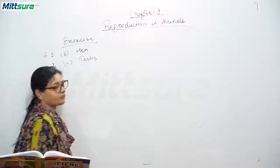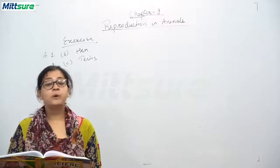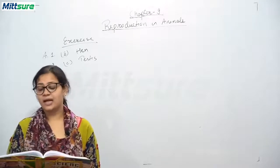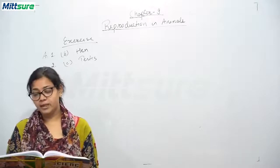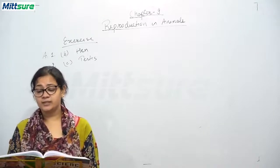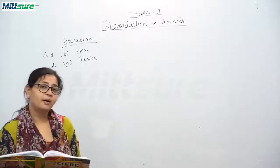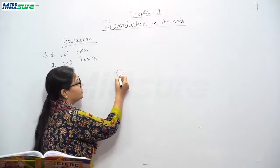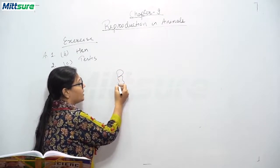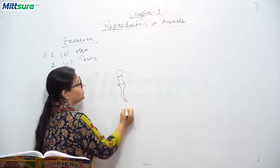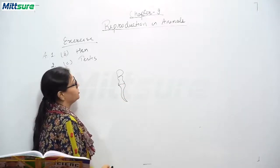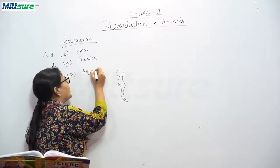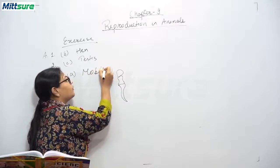Third: the sperms are — a) mobile, b) static, c) both a and b, and d) none of these. The correct answer is a) mobile. Sperms have a head, a body, and a tail, so they are moving in nature. Mobile means movement.